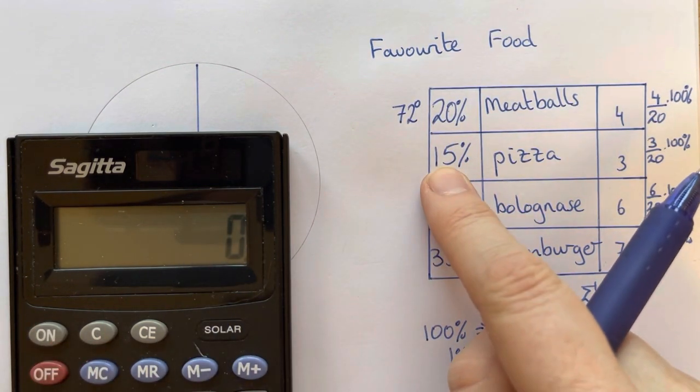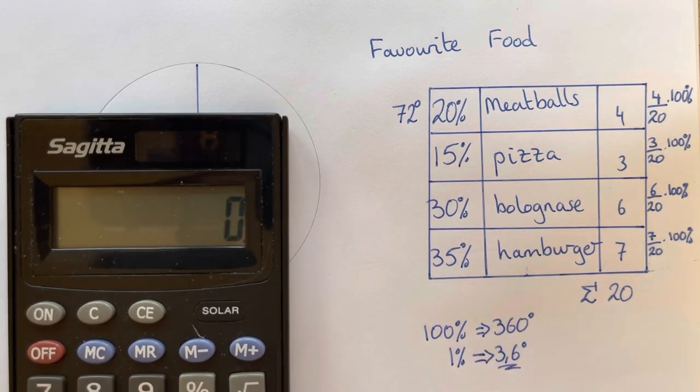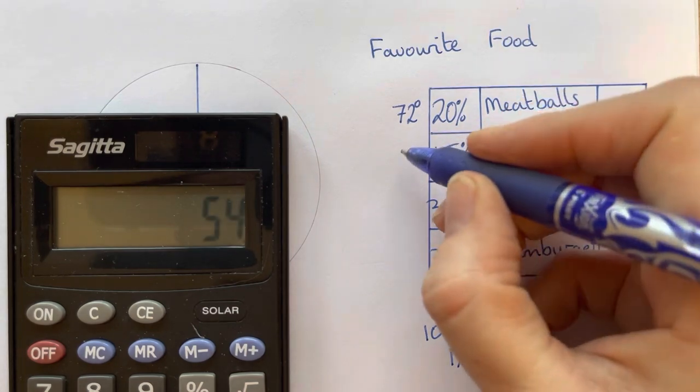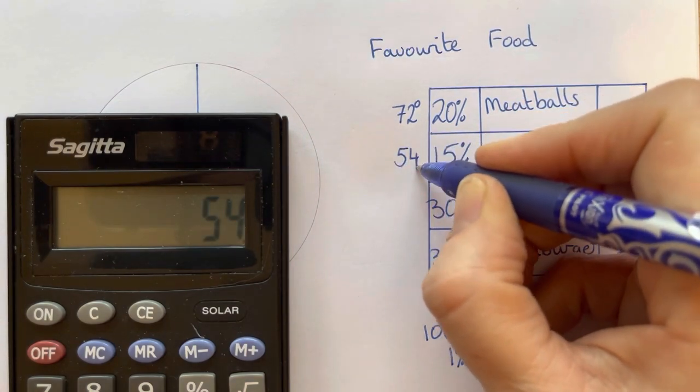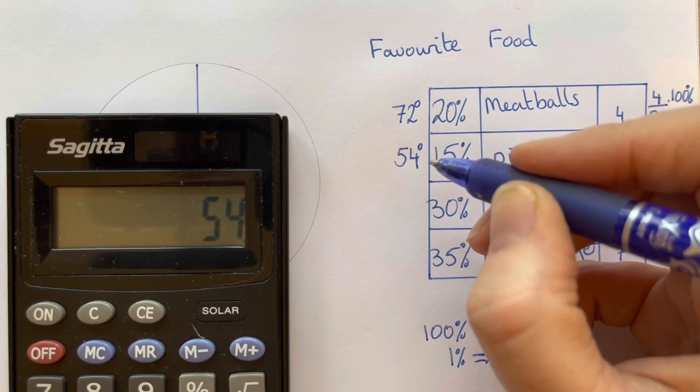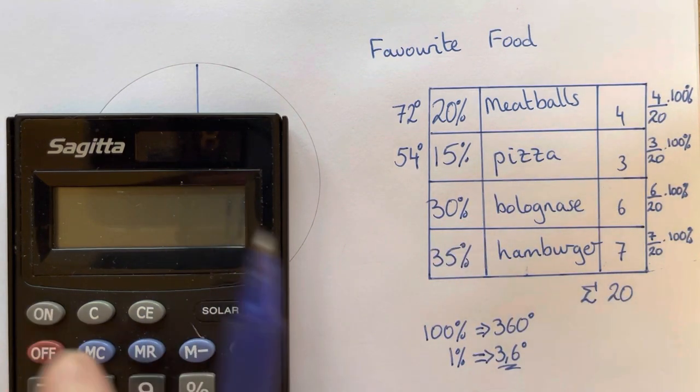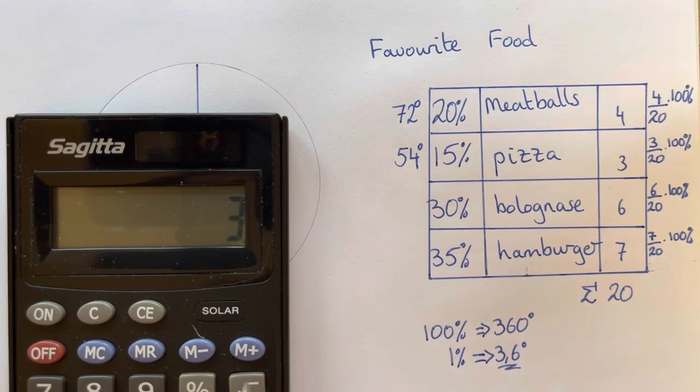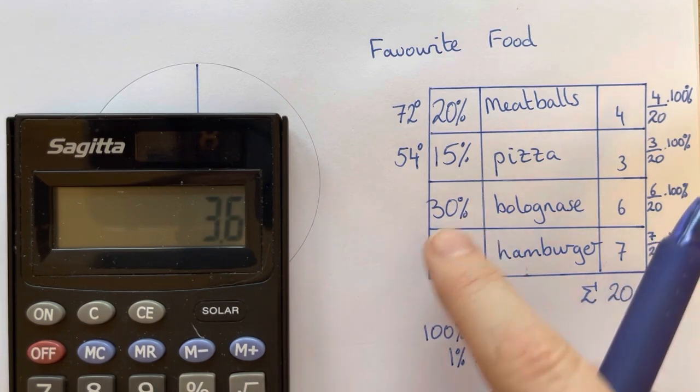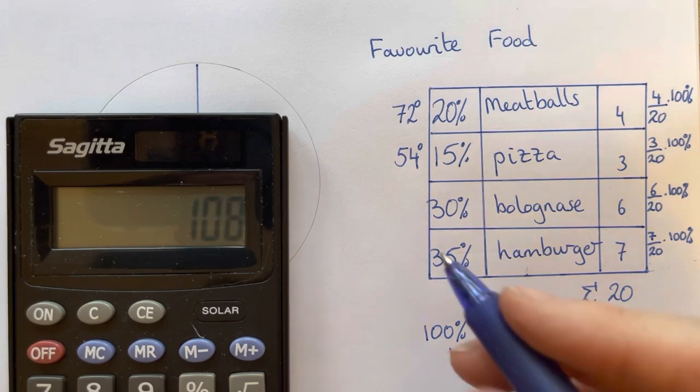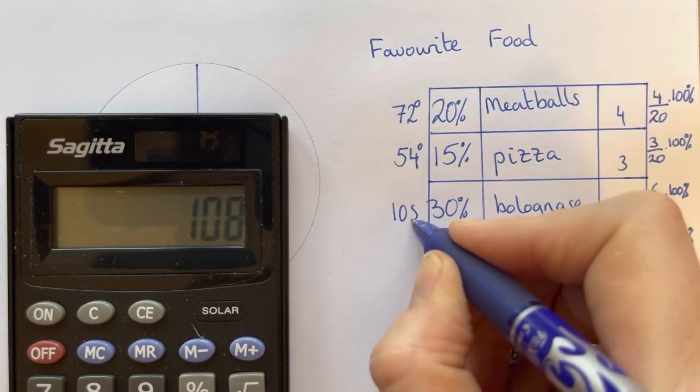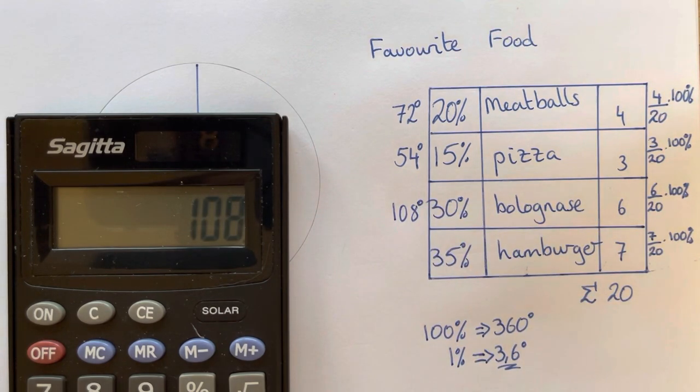When we have 15 percent we would get 3.6 times 15 degrees and that will give us 54 degrees for our circle. 30 percent would give us 3.6 times 30 percent which would be 108 degrees of our full circle.